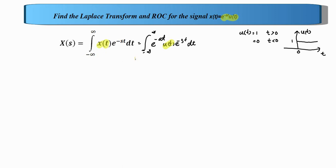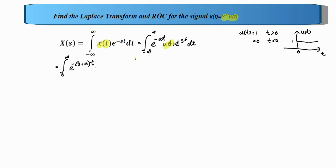The integration is from minus infinity to infinity, but since u of t is 1 only for t greater than 0, we can limit the integration from 0 to infinity. The equation now becomes the integral from 0 to infinity, and we can group the two exponential terms to write e raised to minus s plus a into t, dt.